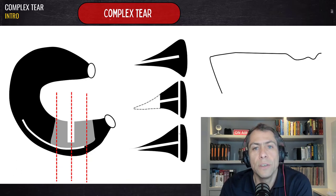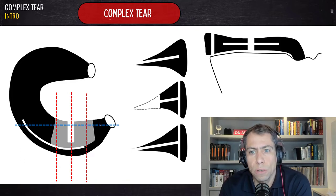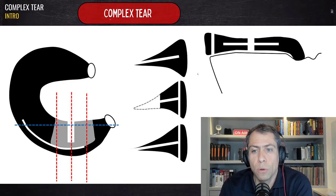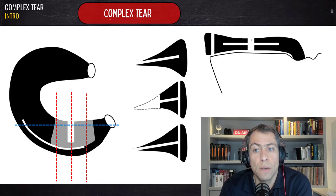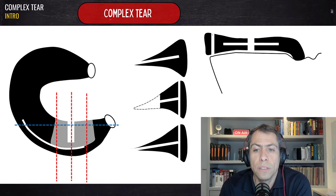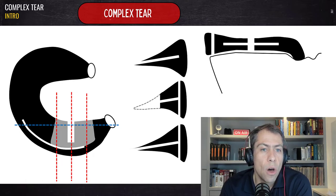In the meniscal long axis — in this case the coronal plane — we can also see the different patterns of meniscal tears. This horizontal line accounts for the horizontal tear. This other image is the partial cleft sign of the partial radial tear. And this other image at the periphery of the meniscus accounts for the vertical longitudinal component of this complex tear.